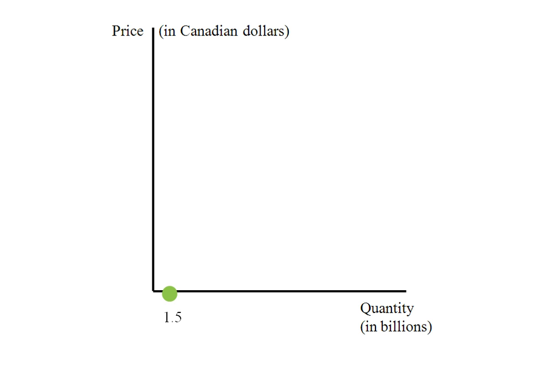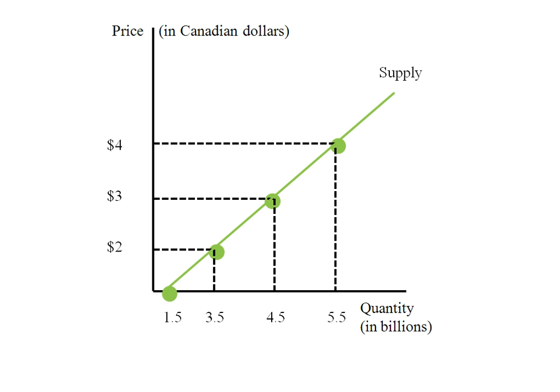I can go ahead and plot my other points now. I know when the price is $2, the quantity supplied is 3.5 billion. I found that when the price is $3, the quantity supplied is 4.5 billion. And when the price is $4, 5.5 billion. I can connect all of these points and that becomes my supply curve.